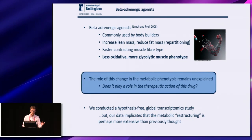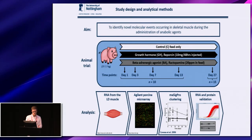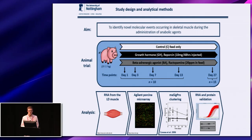Our experiment wasn't designed to answer that question, but I want to introduce it because some of the data we find suggests that the extent of this metabolic change might be more than what we have previously known. The study design's ultimate aim was to identify molecular events that are occurring in the skeletal muscle during the administration of anabolic agents.